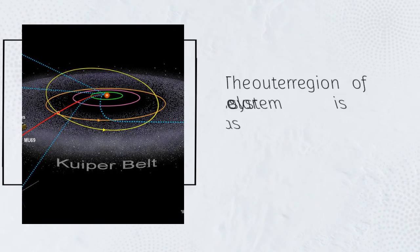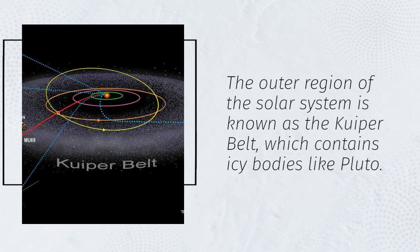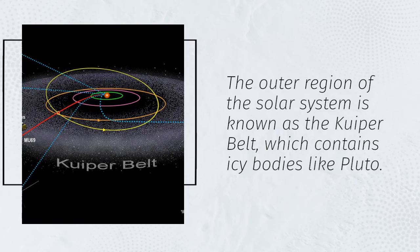The outer region of the solar system is known as the Kuiper belt, which contains icy bodies like Pluto.